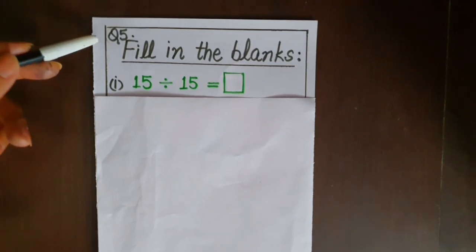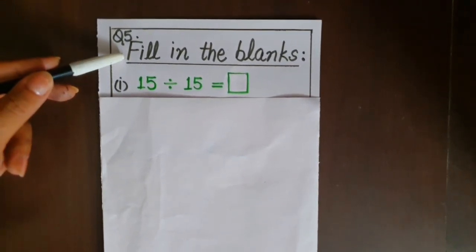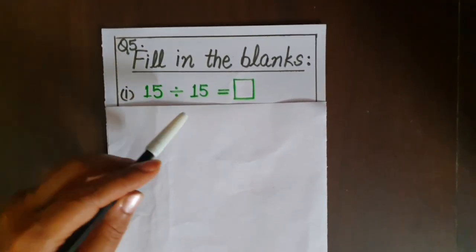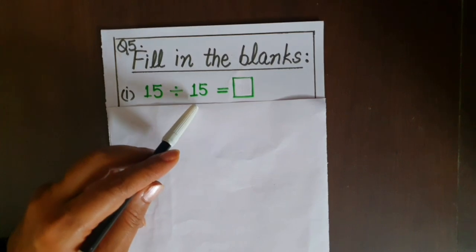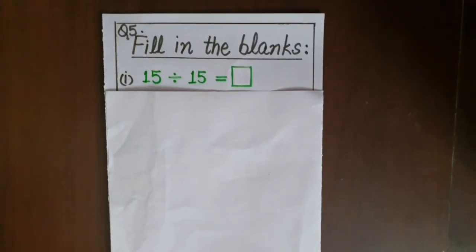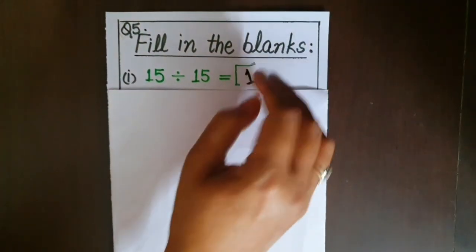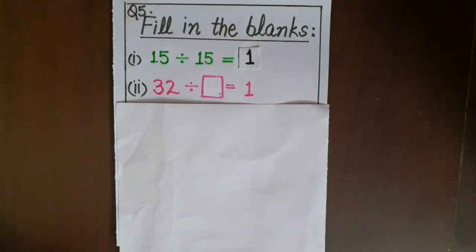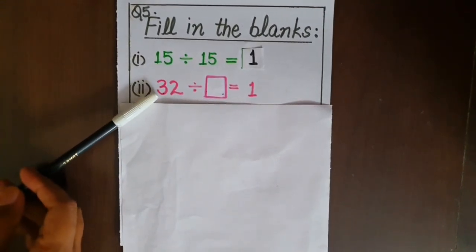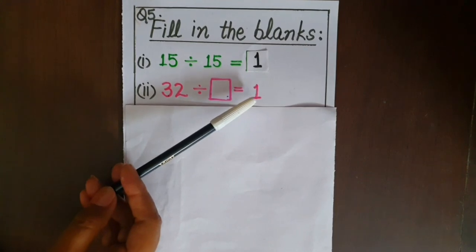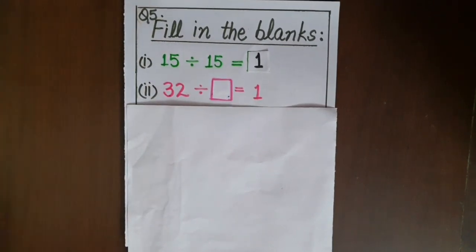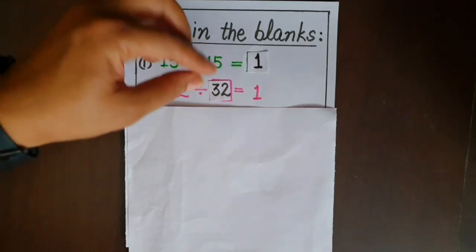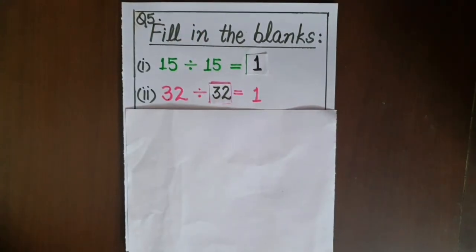Now let's do question five of the worksheet — fill in the blanks. Part one: by dividing 15 with the same number 15, we get an answer — yes, one. Next part: with which digit should we divide 32 to get an answer one? Yes, we will divide 32 with the same number 32 to get an answer one.